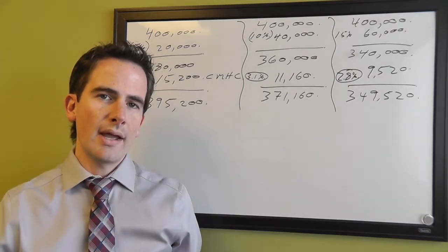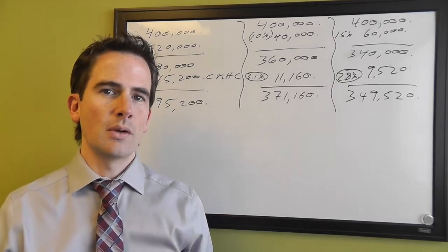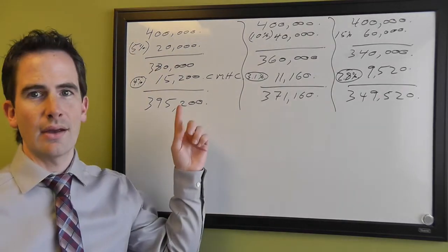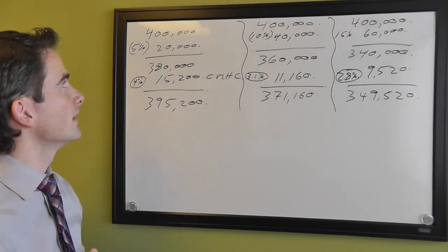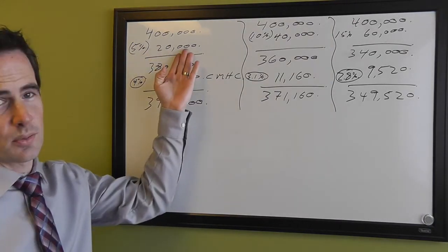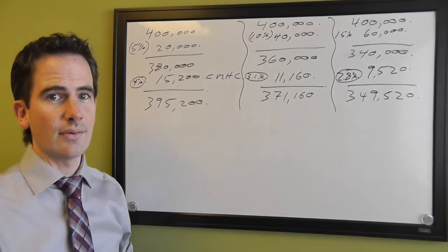which is when you buy a house with less than 20% down, how that actually works. So if you buy a house with less than 20% down, let's say in this example here, you're buying a house for $400,000 and you're putting 5% down. So 5% down on $400,000 is $20,000 down.